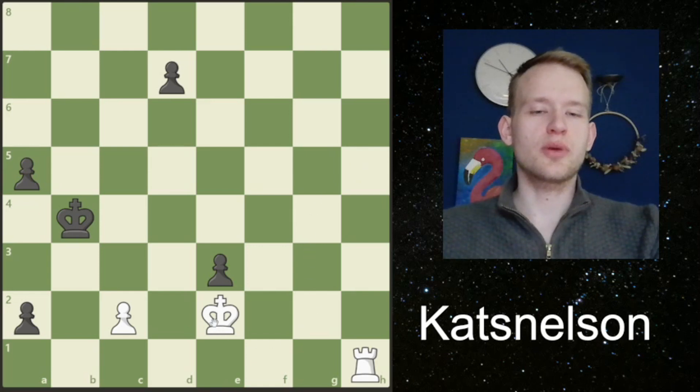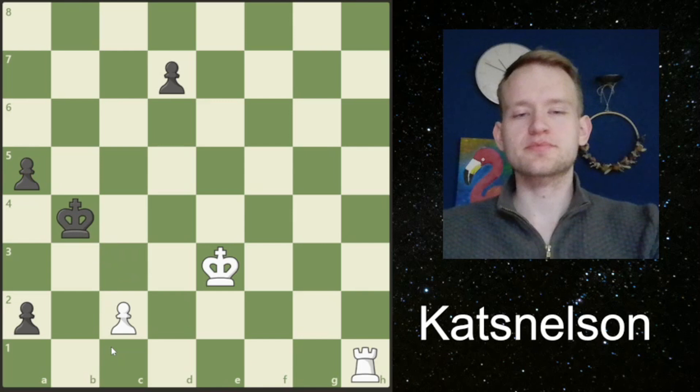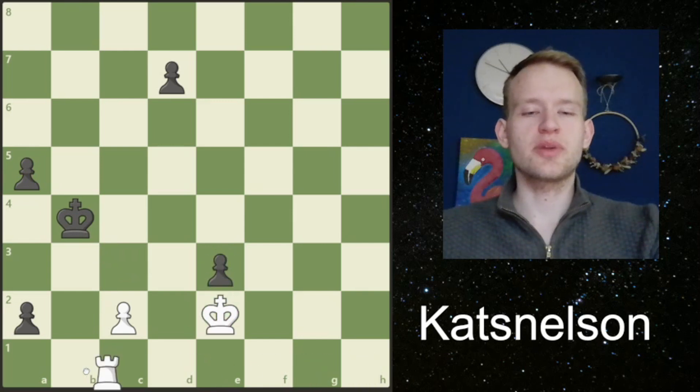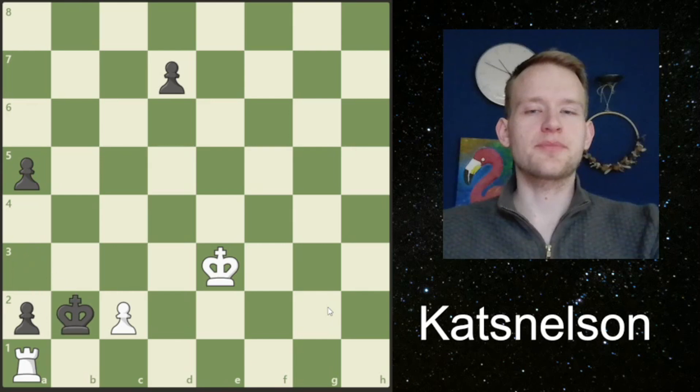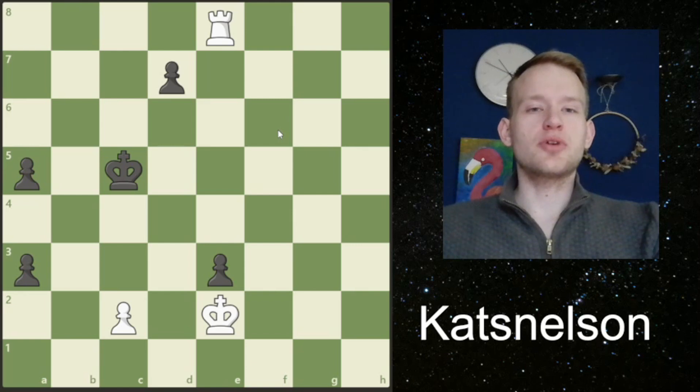I think here we have two options. We can either take the pawn here, when black will be in time to play king to b2, and white would be very lucky to even make a draw. We can also play rook to a1 immediately here, but also in this line white is not going to win the game. So rook to h8 is maybe making a draw, but it's not winning.